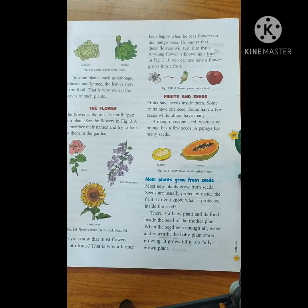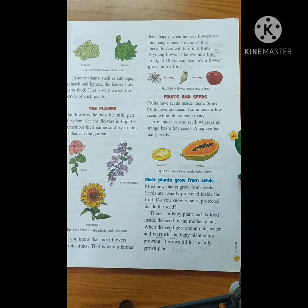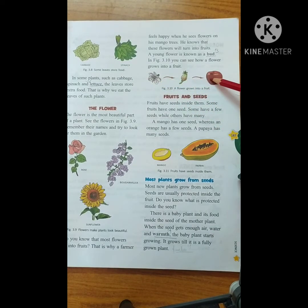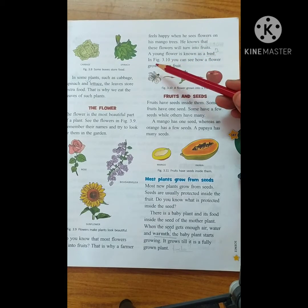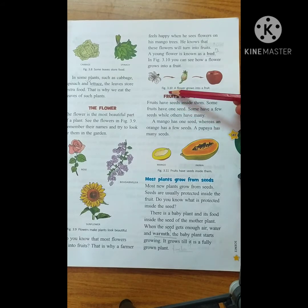The farmers know that their production and yield will be more because the fruits will be arriving very soon and they will be ripening. Now you can see in this picture how a flower is converting into a fruit. A young flower is known as a bud — B-U-D. In figure 3.10 you can see how a flower grows into a fruit.